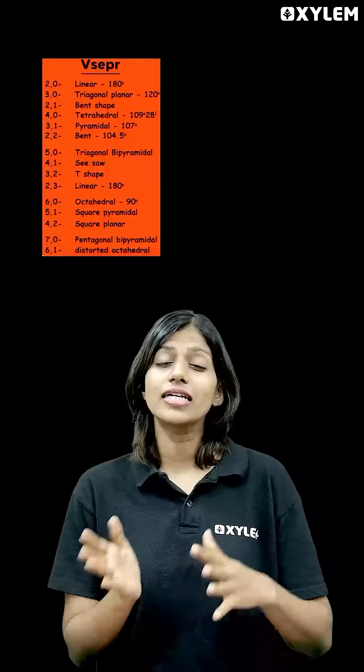I'm going to show you the number of bond pairs. 2-0 is linear, 3-0 is trigonal planar, 2-1 is bent.